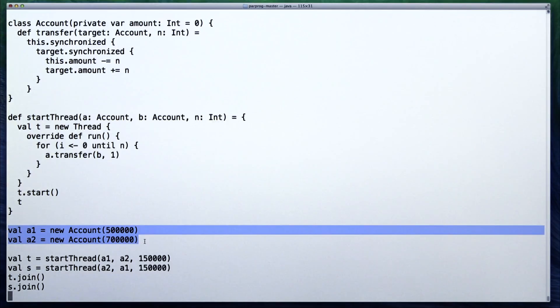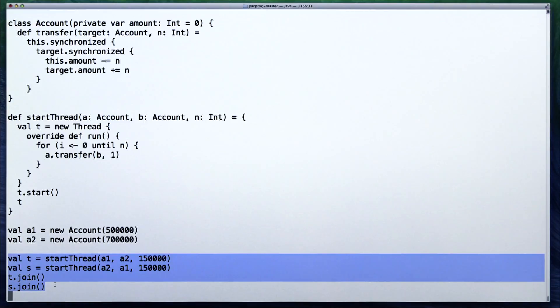We then instantiate two accounts a1 and a2. We then start two threads t and s and wait for their completion. The thread t transfers an amount 150,000 from the account a1 to the account a2 and the thread s does the opposite, transfers from account a2 to a1.